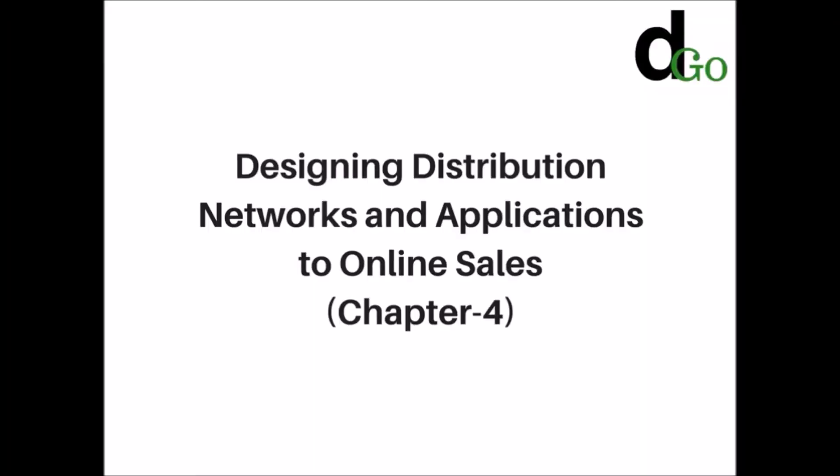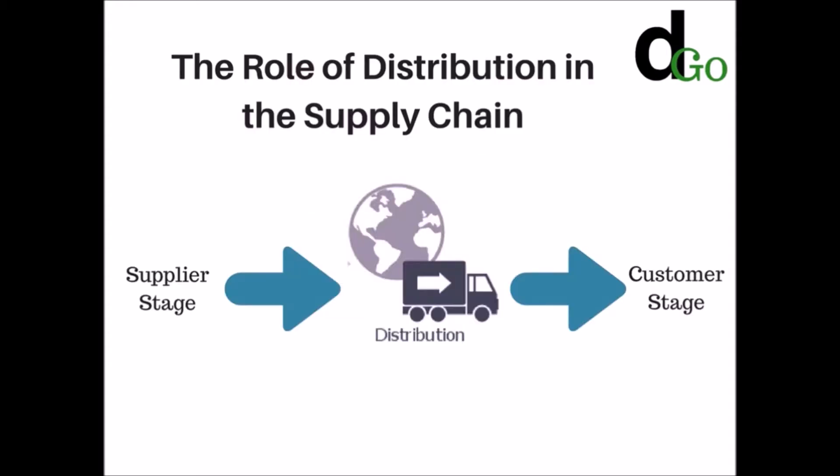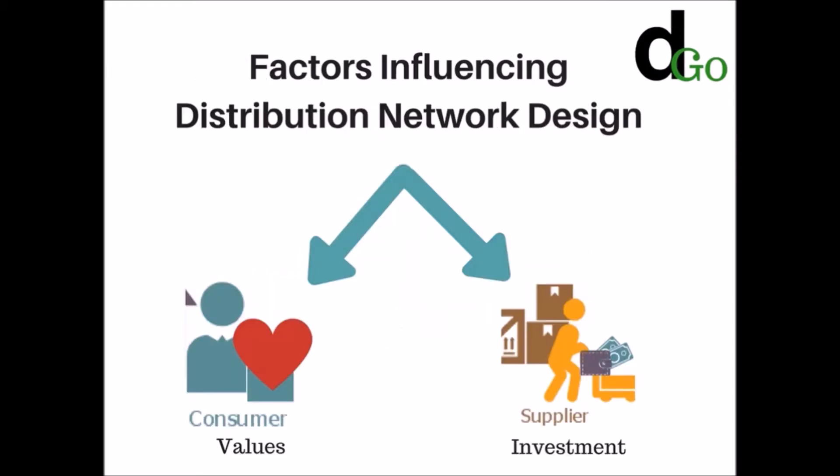Welcome to another video. In this video we're going to discuss Chapter 4: the role of distribution in the supply chain. Distribution refers to the steps taken to move and store a product from the supplier stage to the customer stage. The factors influencing distribution network design are basically two: the value given to customers and the investment incurred in the delivery process.